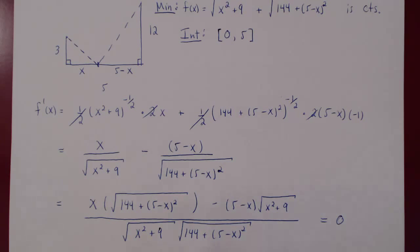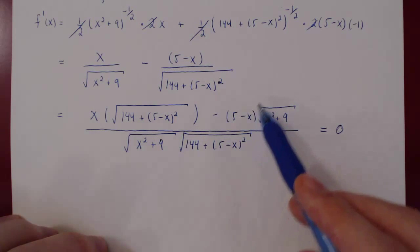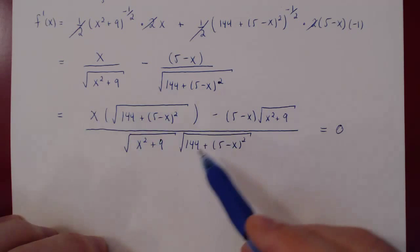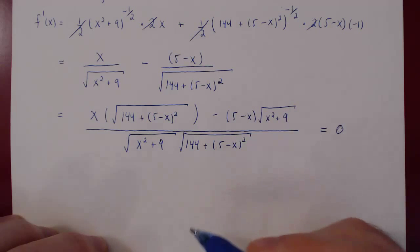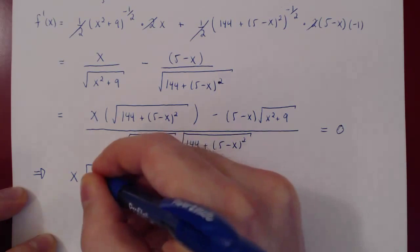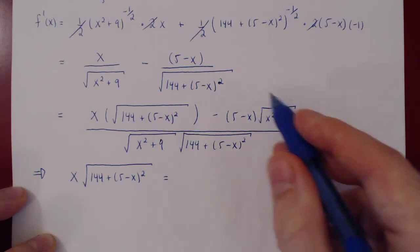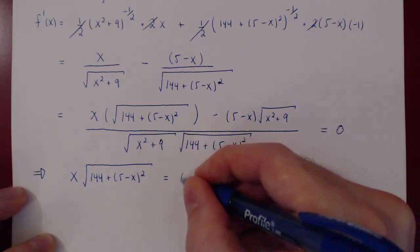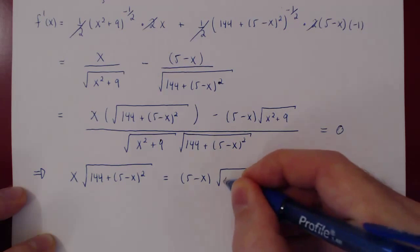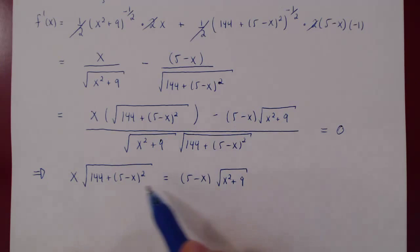We set the numerator equal to zero: x times √(144 + (5−x)²) minus (5−x) times √(x² + 9), all over the common denominator, equals zero. For a fraction to equal 0, the numerator must be 0. So we have x·√(144+(5−x)²) = (5−x)·√(x²+9). This does not seem like an easy equation to solve because of the square roots.